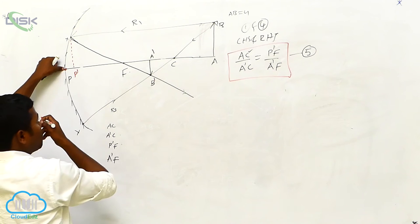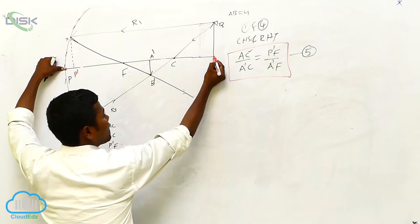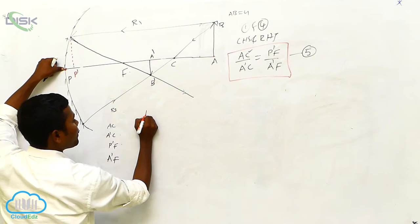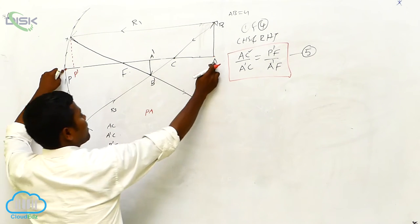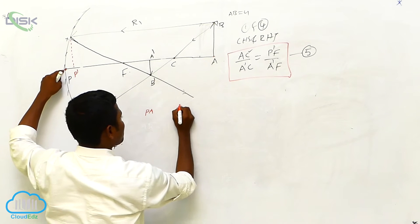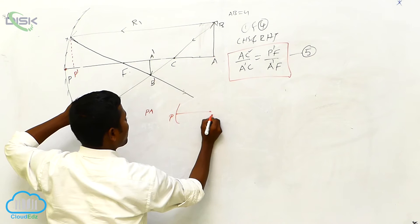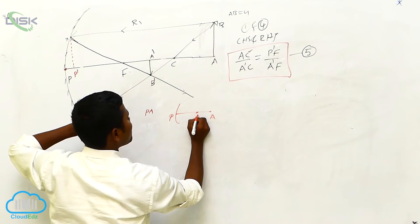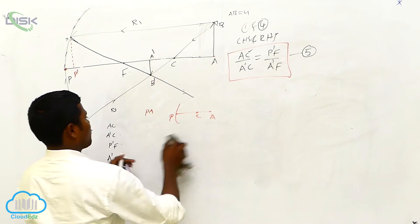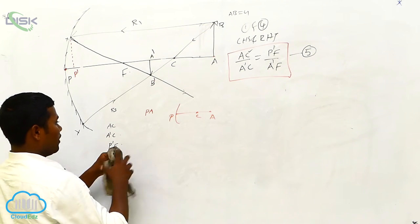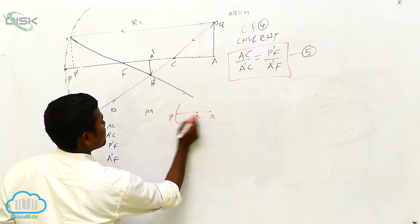So this is the pole. Here which point is there? P point is there. Here A point is there. Before that, C is there. I want only PA. See PA — PA is equal to what I can add? PC plus this distance and this distance. Then we can say that is the total PA.